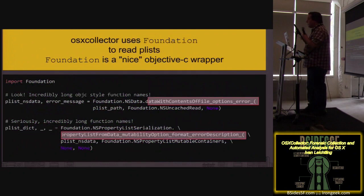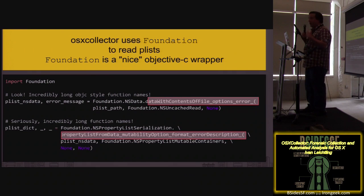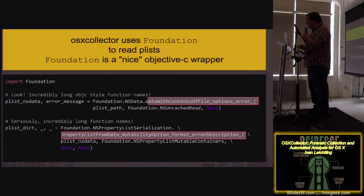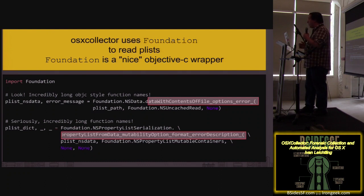OSX Collector uses the Python Foundation package to read plists — it's a nice wrapper around Objective-C that the operating system exposes. The operating system exposes all these nice system calls. If you're on Python, you stumble on Foundation. If you've written Objective-C, you'll immediately notice that everything in Foundation looks a lot like Objective-C — no Python developer in their right mind would make a function name that long. But it gets you at the system without writing compiled code.